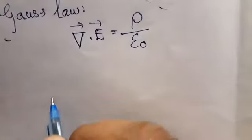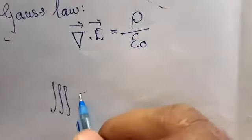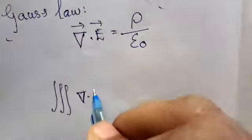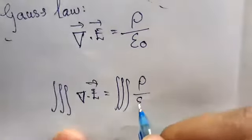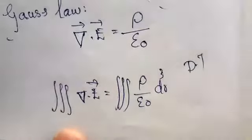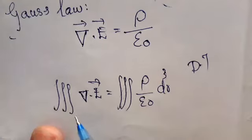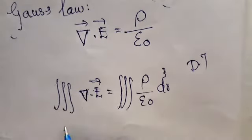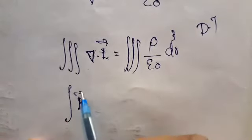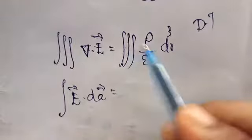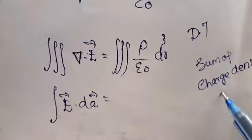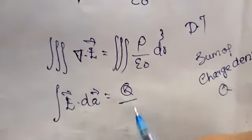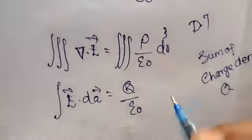Taking the triple integral on both sides and applying the divergence theorem, the integral of E vector dot dA vector equals, since epsilon naught is constant, the sum of charge density is total charge Q. So it becomes Q divided by epsilon naught. This is the integral form of Gauss's law.